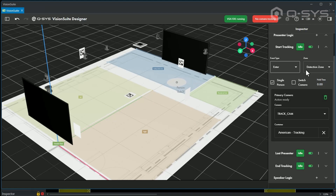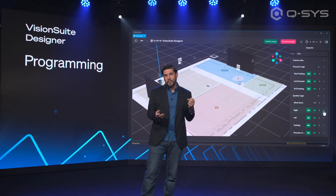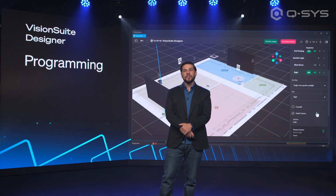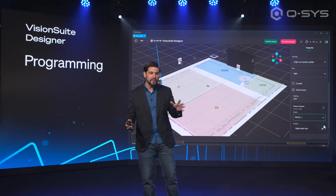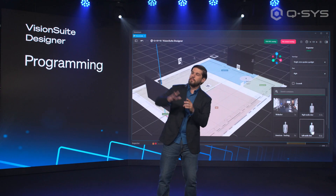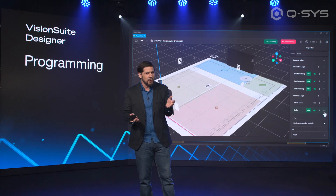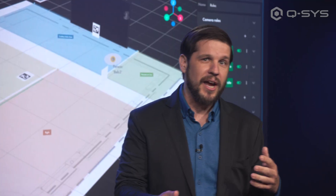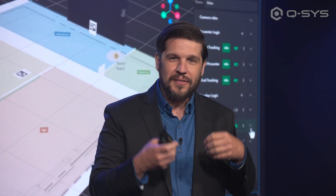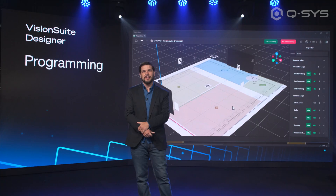The best way to think about programming a VisionSuite system is to pretend you're a movie director. When you're designing a VisionSuite solution, you are directing or producing the meeting experience. Just as a director might say, if somebody's talking from this area of the room, it's best to get a shot with that camera. Or if somebody walks to a whiteboard, what do we want to do with the lighting or camera framing? If someone's walking around, do we want cinematic tracking of that person? It's a very fun and creative process to design a system.